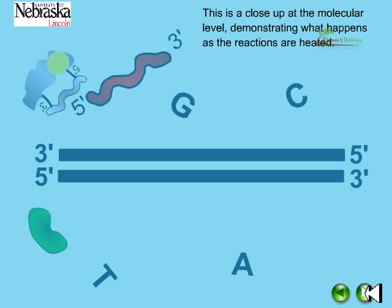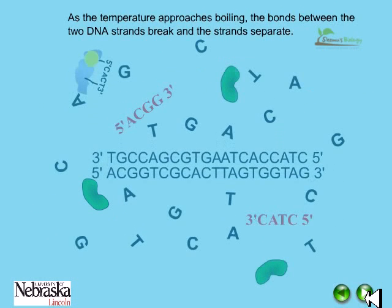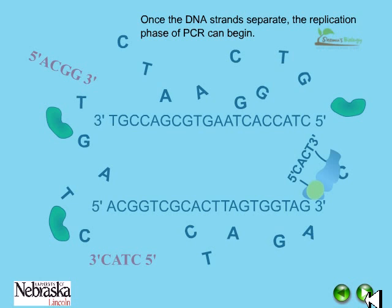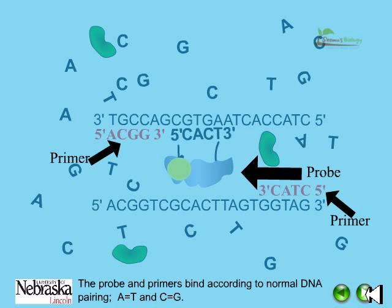This is a close-up at the molecular level demonstrating what happens as the reactions are heated. As the template approaches boiling, the bonds between the DNA strands break and the strands separate. Once the DNA strands separate, the replication phase of PCR can begin. The tube is cooled to 60 to 62 degrees Celsius to allow the probe and primers to bind their respective complementary sequences on the DNA template. The probe and primers bind according to normal DNA pairing — that is, A pairs with T and G pairs with C.